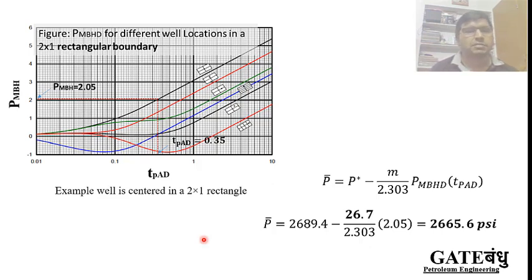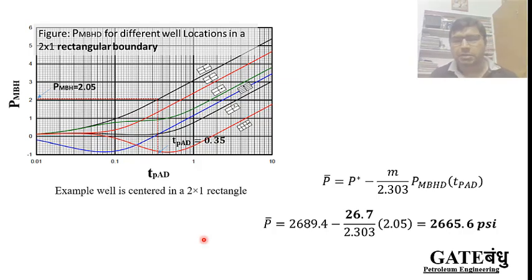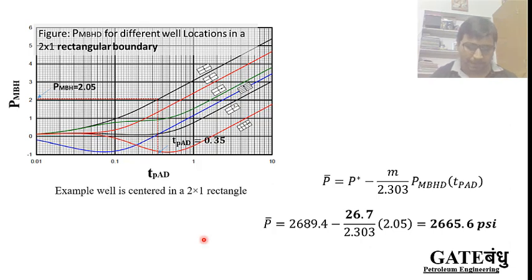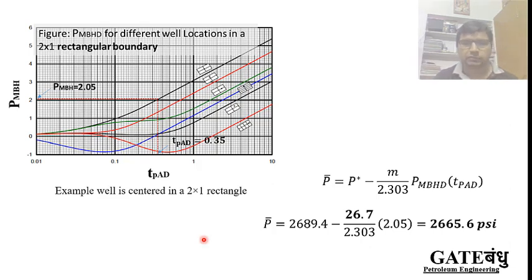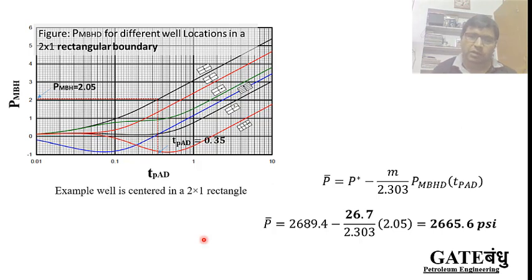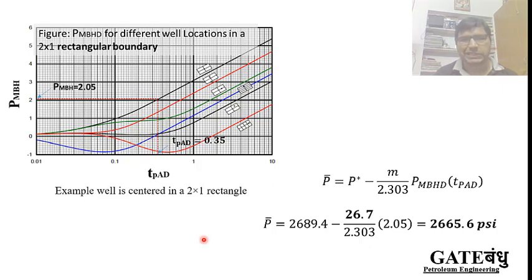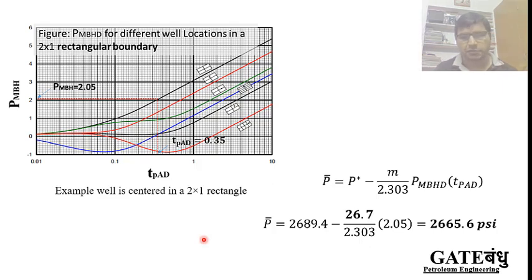You can choose other geometries or different data sets and follow the same steps to calculate the average static drainage area pressure. In the next part, I will discuss the other method for estimating this average drainage area pressure. If you have any doubts, let me know in the comment box. Thank you.